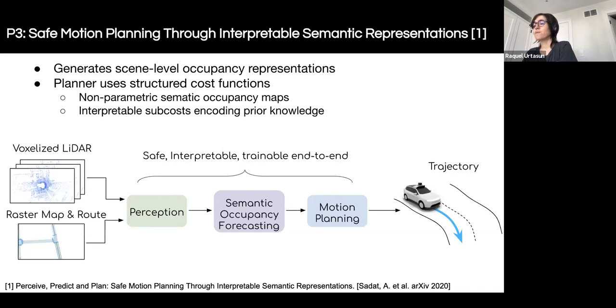We tackle this issue by designing a novel end-to-end approach that perceives, predicts, and plans. The core idea is very simple. Rather than performing object detection and then predicting trajectories for each object, our model directly generates semantic future occupancies. Furthermore, the occupancy forecasts are scene-based and instance-free and hence our approach does not require thresholding of detection scores or performing NMS, thus increasing safety. The planner uses these non-parametric spatial-temporal occupancy maps along with other interpretable costs to plan a trajectory that is safe, comfortable, and respects traffic rules. Note that the entire model can be trained end-to-end since all the components are differentiable.